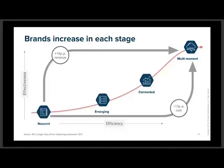Transavia had two main issues. First, they had a one-size-fits-all communication style. For instance, if you visited their website and looked for a flight from Amsterdam to Barcelona, you'd get a banner saying 'Amsterdam–Barcelona, buy a ticket now from 39 euros' — no matter what you did on the site. It was plain retargeting without any additional intelligence behind it.